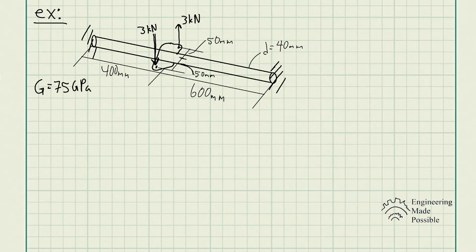For this problem statement, the steel shaft has a diameter of 40 millimeters and is fixed at its ends A and B. If it is subjected to the couple moment, determine the maximum shear stress in regions AC and CB of the shaft. The modulus of elasticity is given as equal to 75 gigapascals.